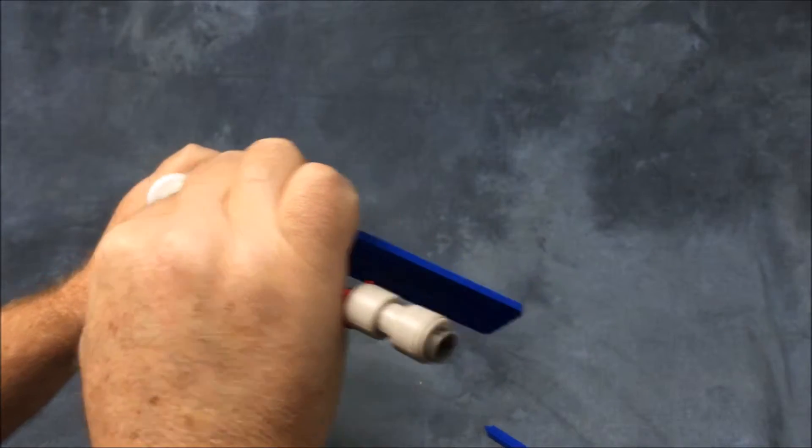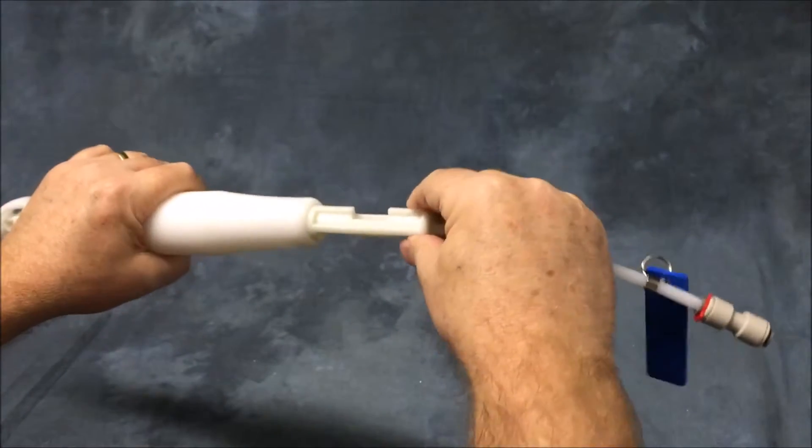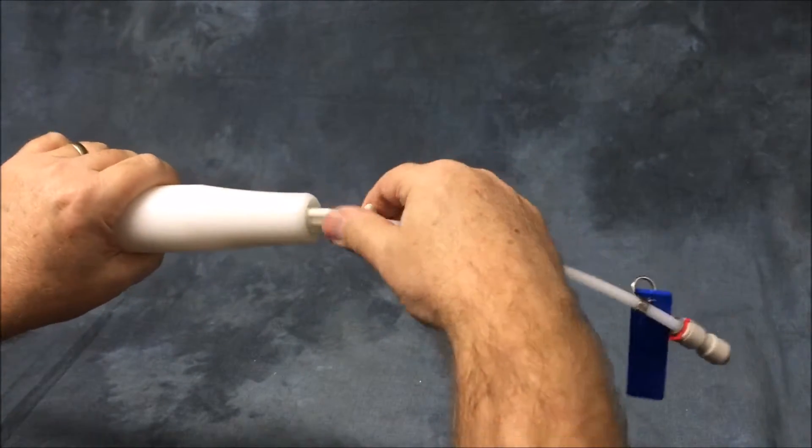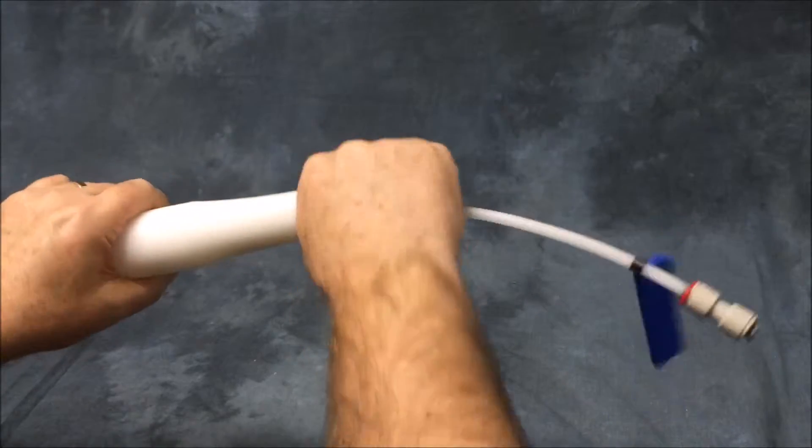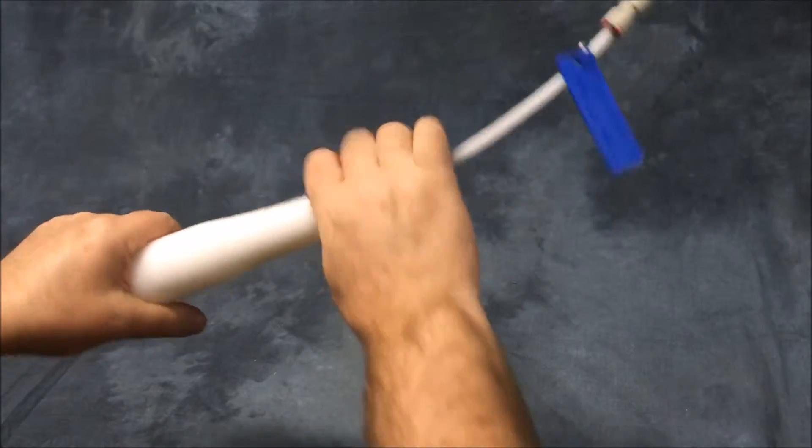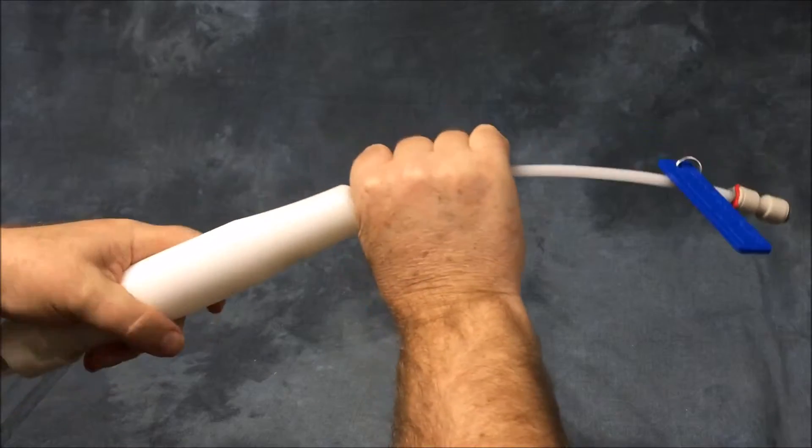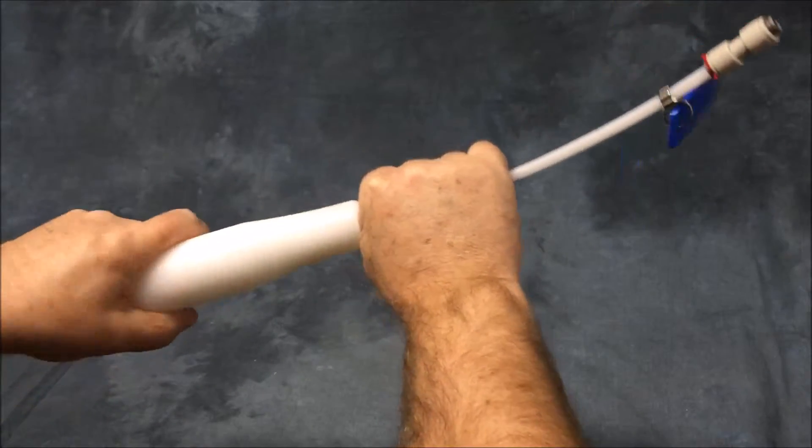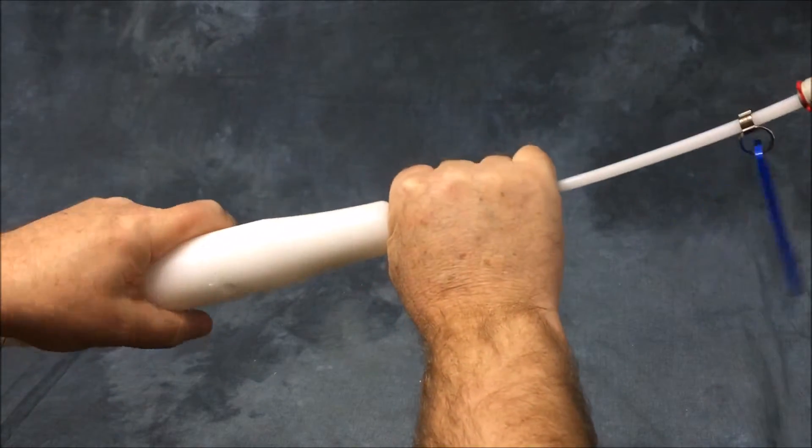Once you've fed that in, use this wrench to tighten that nut. You're going to tighten that nut tight enough by hand. You're not going to use a tool, just tighten this as tight as you can, basically until it makes a little squeak sound.